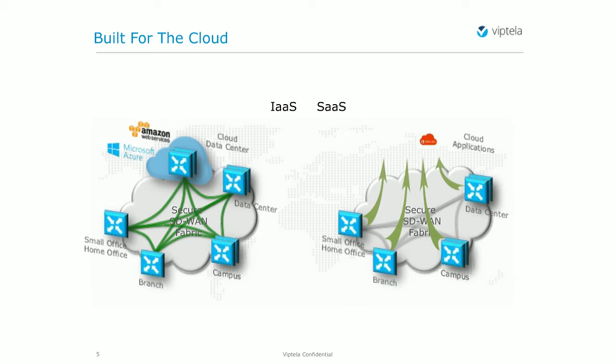We are opening up a poll. We want to understand your network environments and know if video and cloud applications are critical for your network. You can go to the voting tab and vote on that question. Khalid, what impact on current WAN architectures is happening because of this shift in present and future business needs?